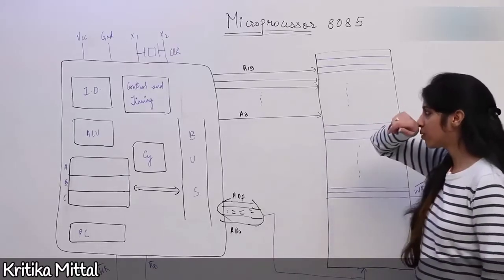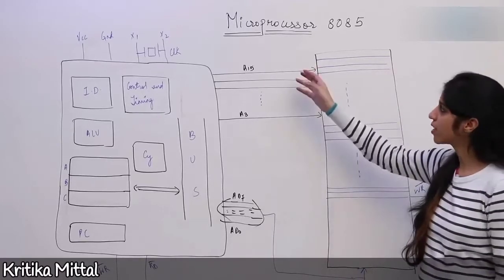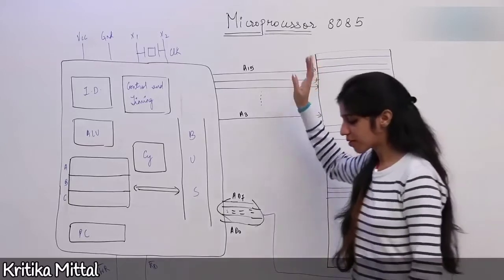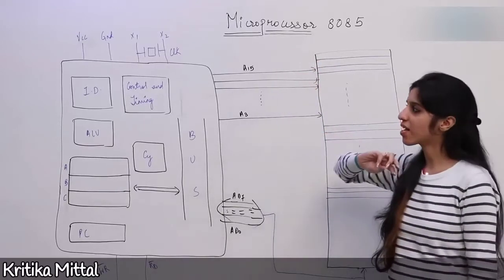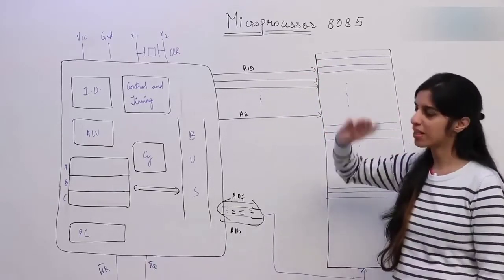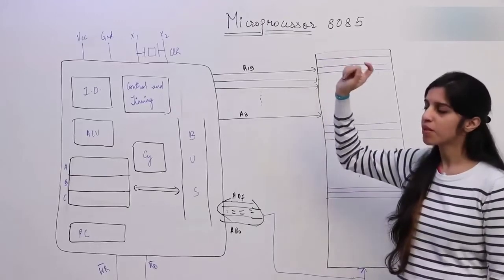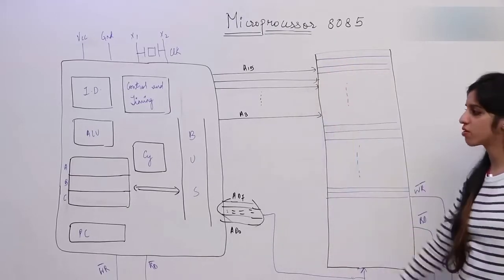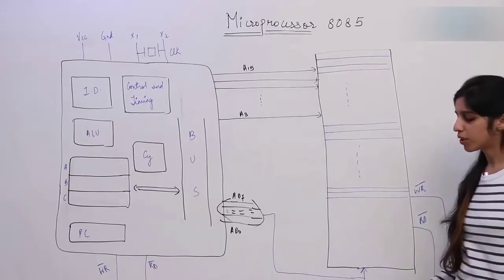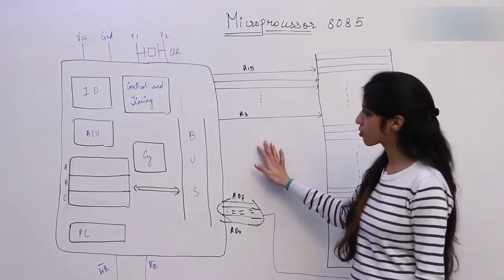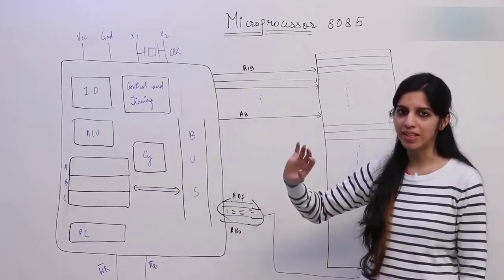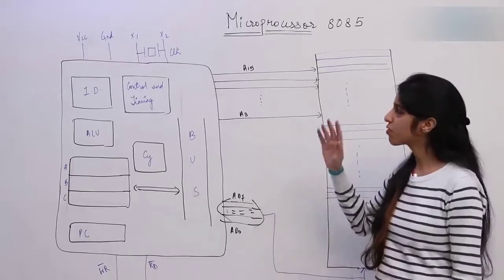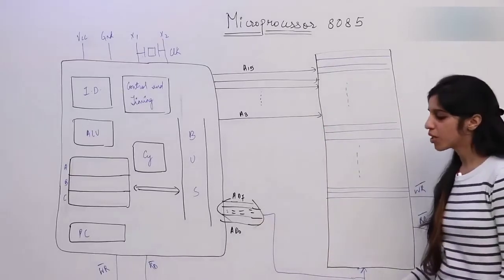Hello people. Today we are going to look at a new subject which is Microprocessor 8085. In microprocessors, they are asking about two microprocessors mainly: 8085 and 8086. Although some topics of 8085 are there in 8086 that you do not need to study, you can study one microprocessor nicely and completely, and then study the other by relating it. So first we are starting with Microprocessor 8085.